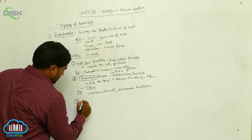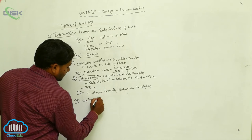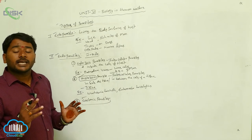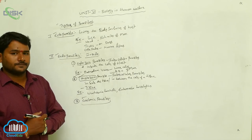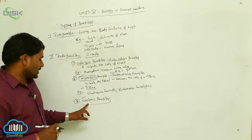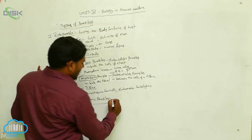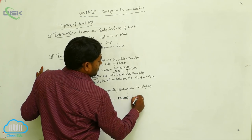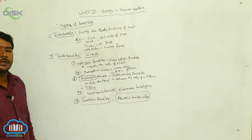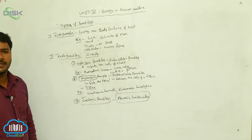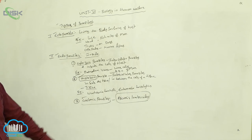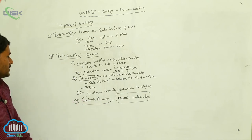Next type is coelomic parasites. The parasites which are living inside the body cavities of the host are known as coelomic parasites. For example, Ascaris lumbricoides is considered a coelomic parasite — a parasite which lives inside the cavities of the host body.